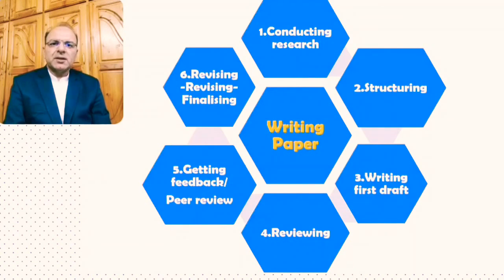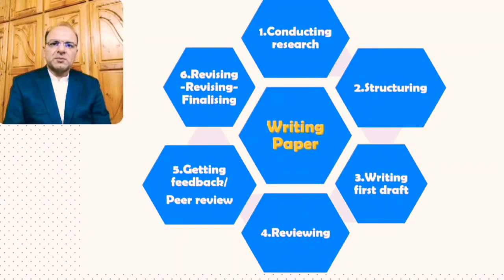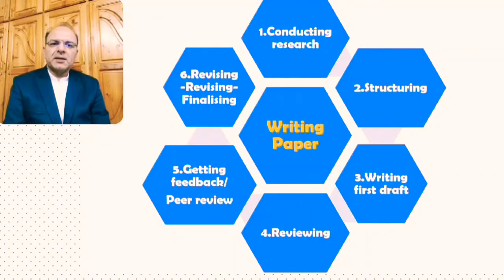Our personal review and revisions lead to an improved paper, which we give for feedback generally to senior colleagues, or if we are student researchers, to our supervisors and other experts in our respective field. After getting feedback, the next step is revising and then finalizing the paper. So once we have conducted our research, structured our research paper, written the first draft, reviewed that draft, and gotten peer review feedback, we improve and revise.